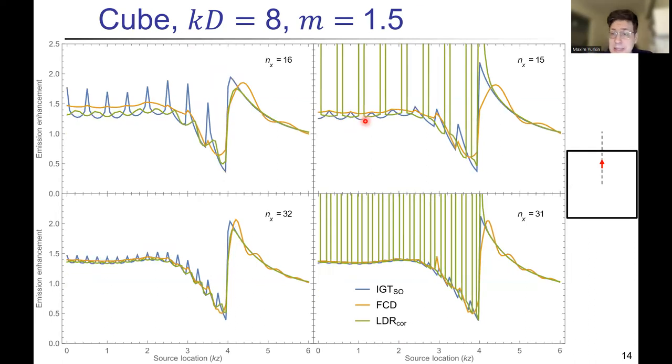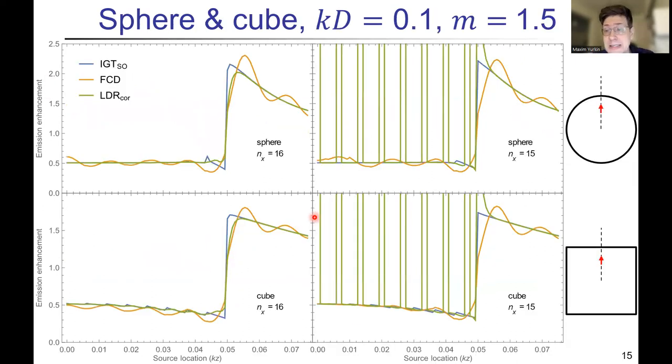For the cube, the results are very similar. The overall trend is a bit different inside, but the simulation accuracy is the same. Then I've tried a particle which is much smaller than the wavelengths, and here IGT is almost exact, apart from way near the boundary. LDR point dipole formulation is a bit worse, and FCD again have this weird oscillation, but gets the overall trend correct.